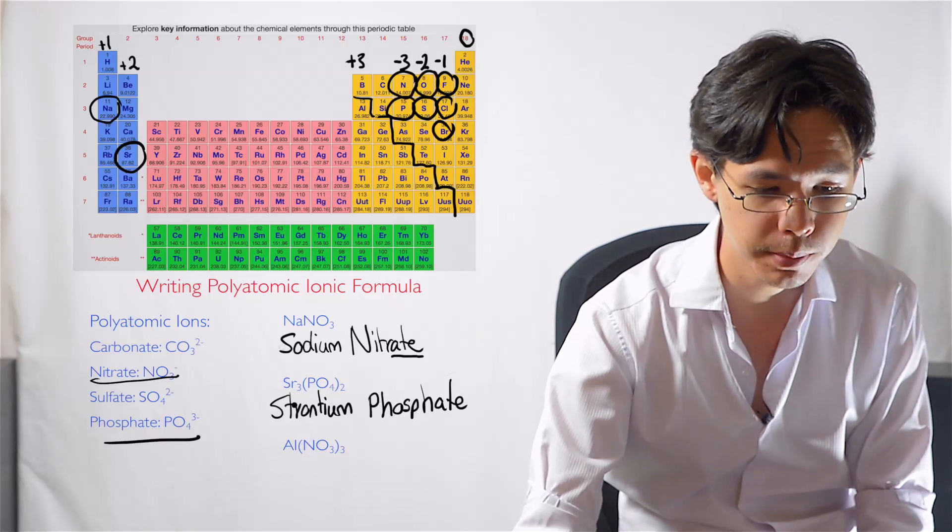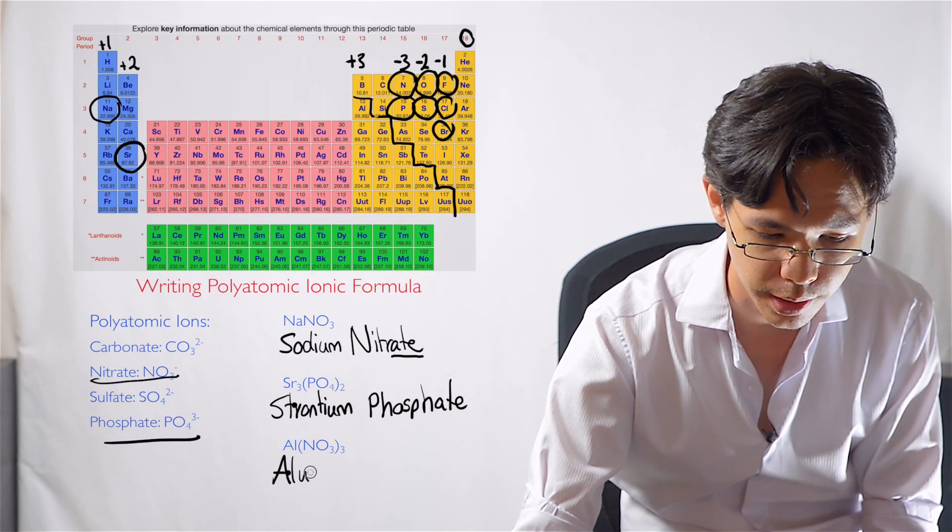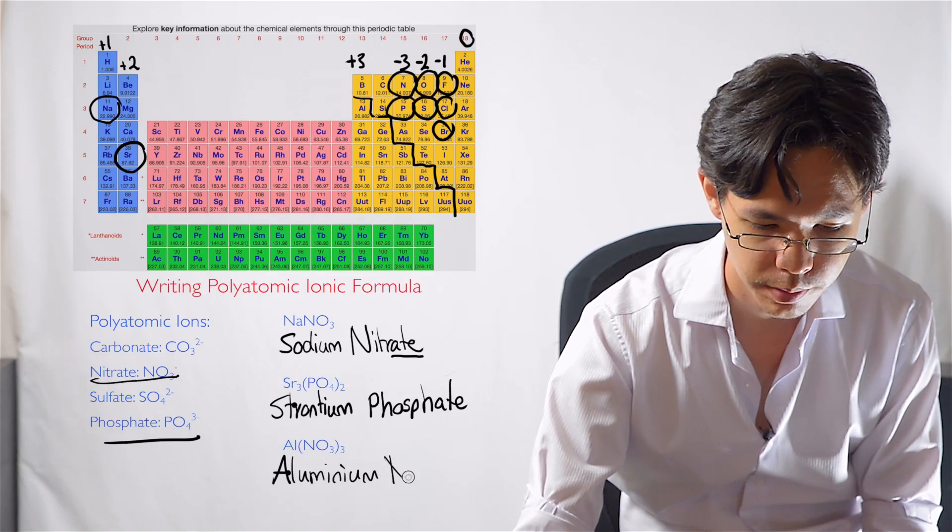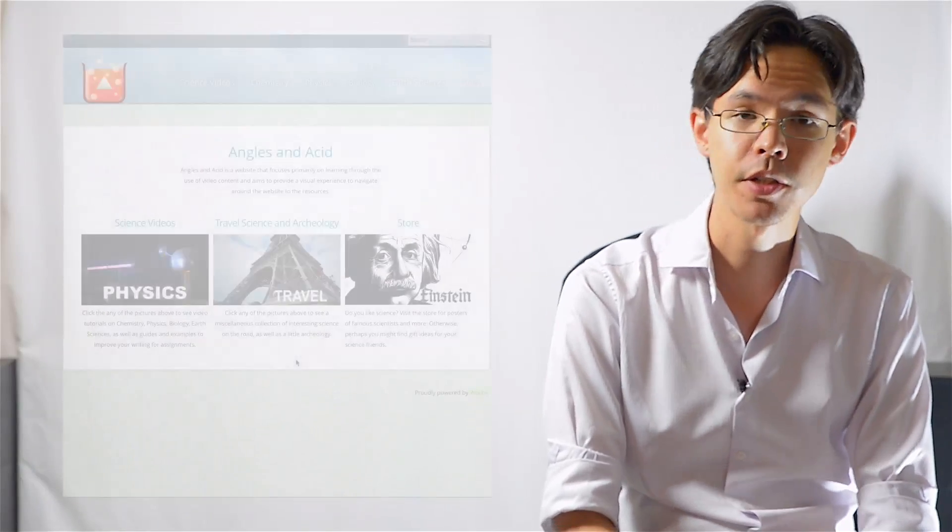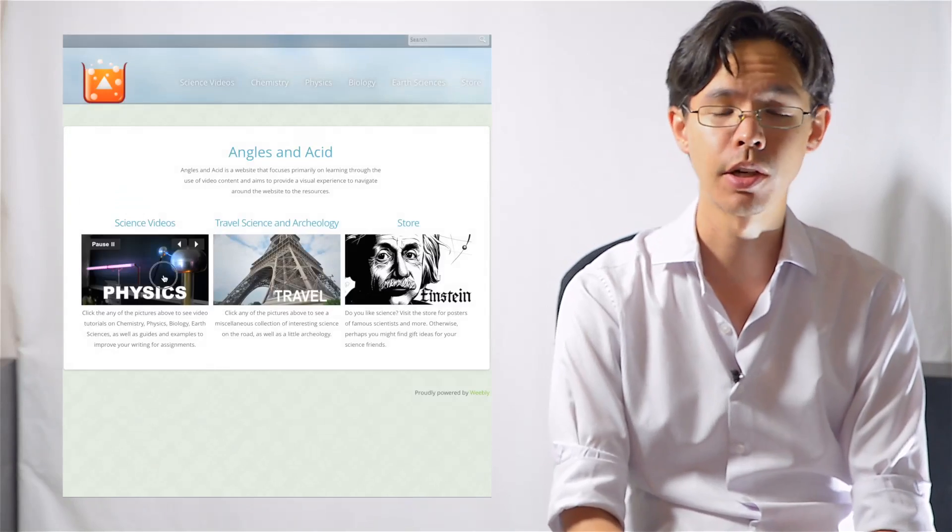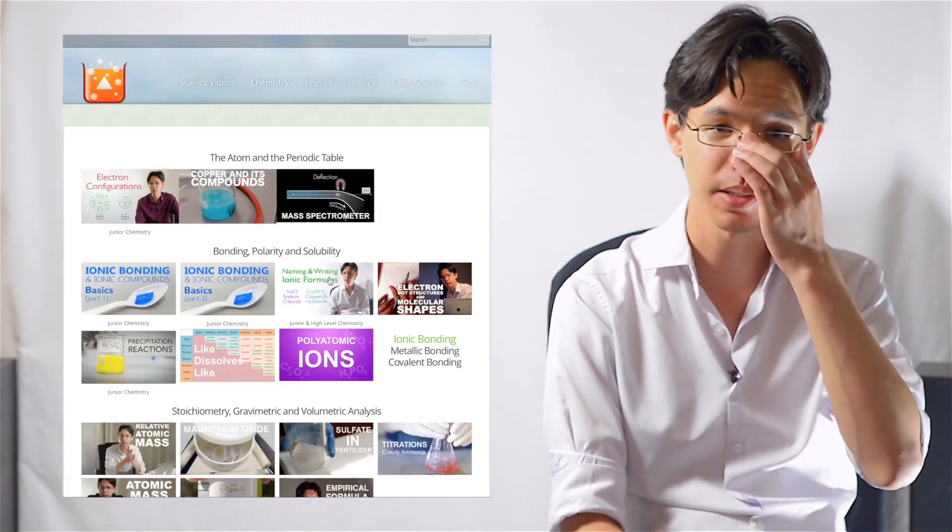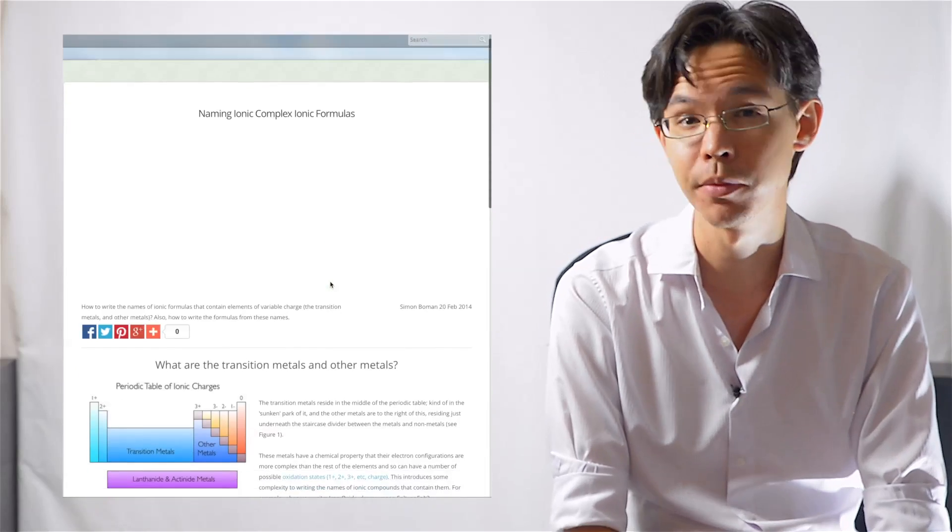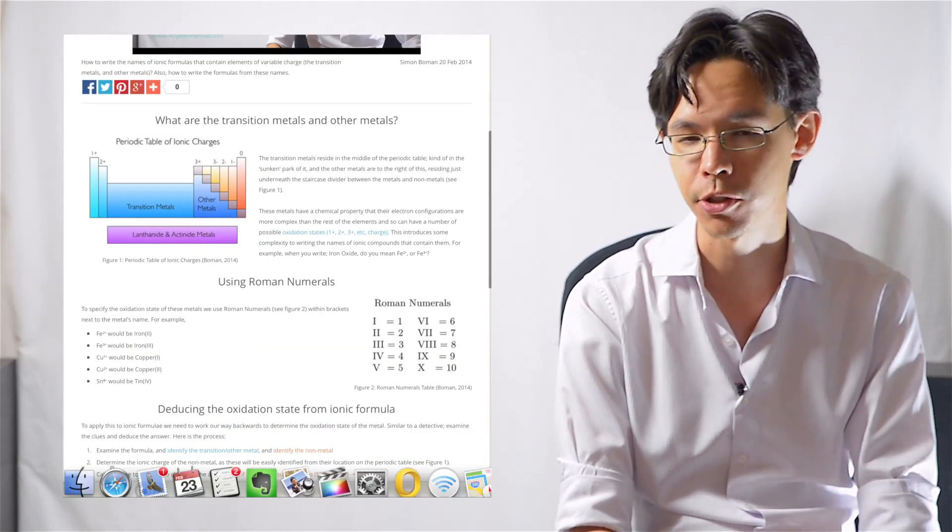The last one here we've got aluminium. And we've got nitrate again. Alright, that's it guys. Don't forget to check my website on anglesandacid.com. I'll have more examples for you to... more practice problems for you to try. And some solutions so you can check your answers to see if you're on the right track. Alright, see you later guys. Bye.